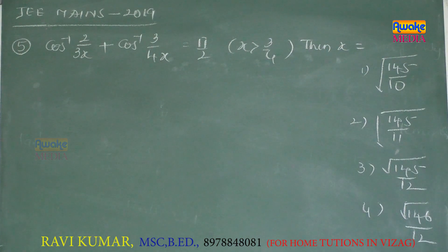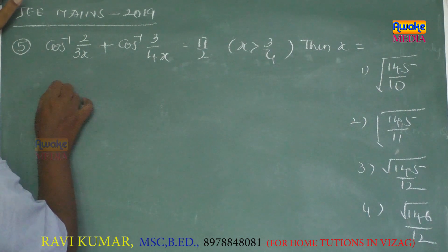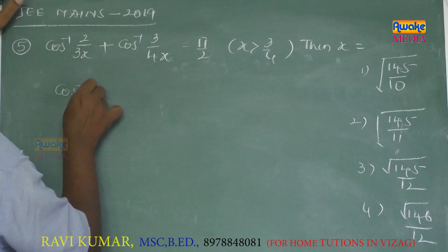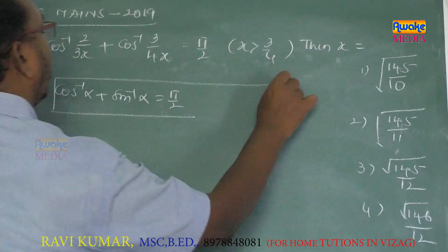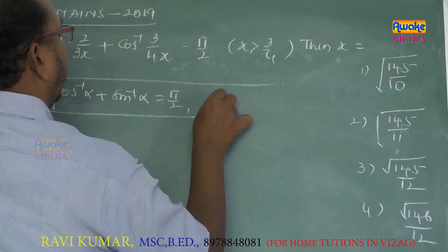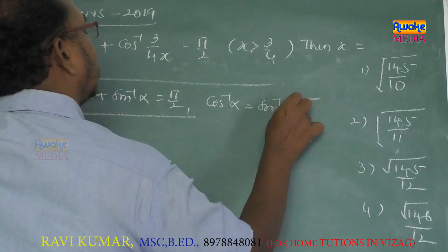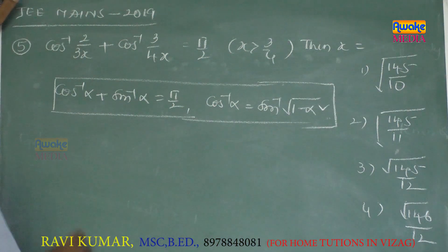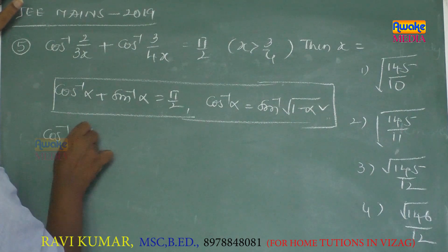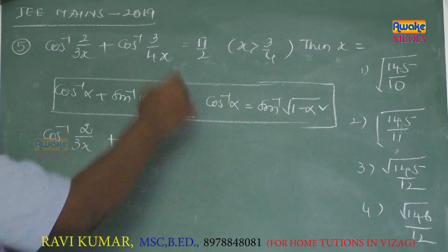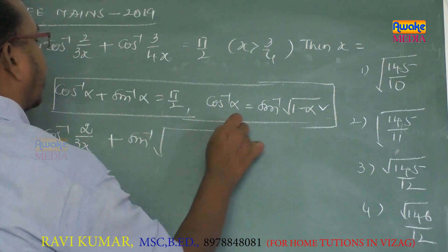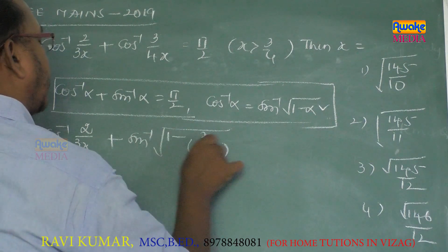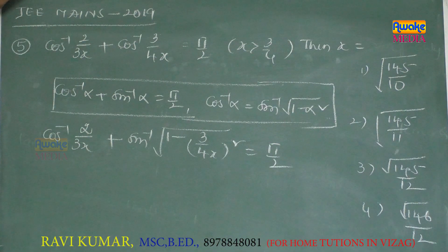Next: cos⁻¹(2/3x) + cos⁻¹(3/4x) = π/2, find x. Using the concept cos⁻¹α + sin⁻¹α = π/2 and cos⁻¹α = sin⁻¹(√(1 - α²)), we rewrite the equation as cos⁻¹(2/3x) + sin⁻¹(√(1 - (3/4x)²)) = π/2.